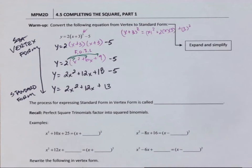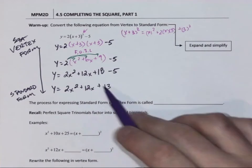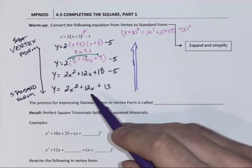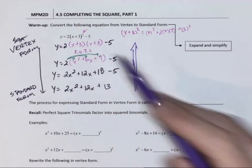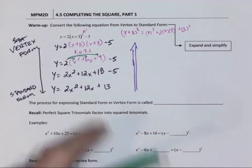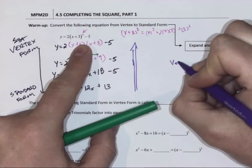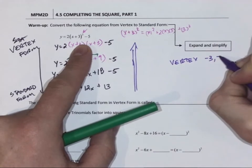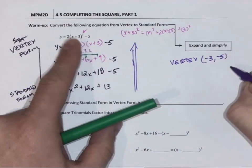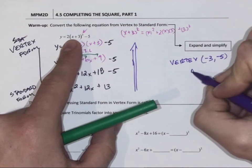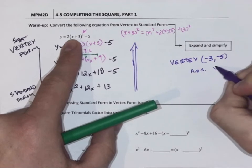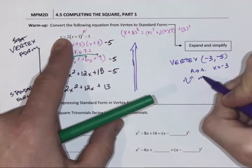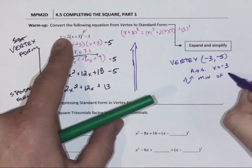What we're going to be looking at today is how do we go the opposite way. So how do we go from standard form into vertex form? Because once we're in vertex form, we can see our vertex of negative 3, negative 5. Let's give this an axis of symmetry, negative 3. It opens up, which means we have a minimum of negative 5.